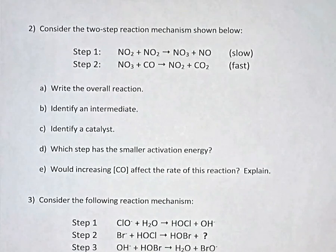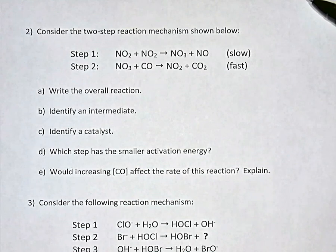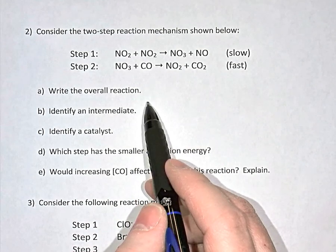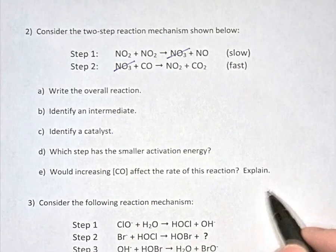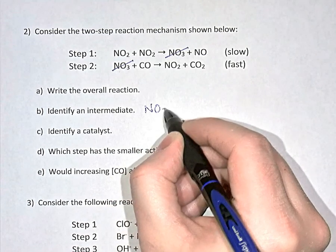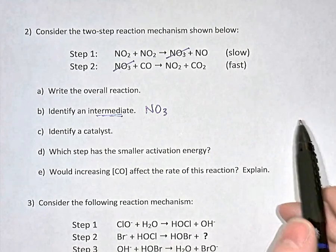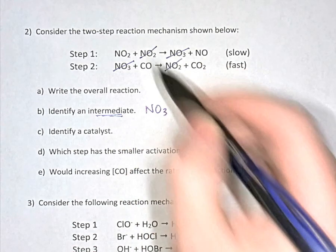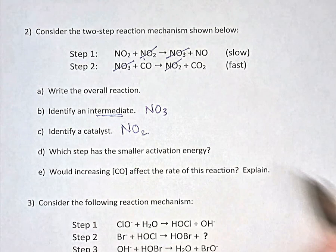Question number two: pause the video and see if you can answer those questions about this two-step reaction mechanism. To find the overall reaction, we cancel out anything that appears on both sides. The NO3 in step one is produced and then used up in step two — produced early, used up later — so NO3 is an intermediate. There's also an NO2 on the left in step two and NO2 on the right, so we cancel out one NO2. When something is initially a reactant and later a product, that is a catalyst — so NO2 is a catalyst.